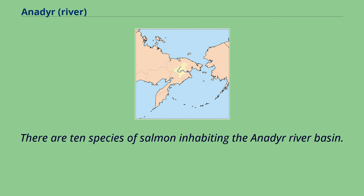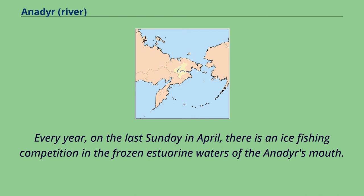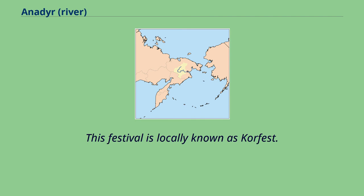There are 10 species of salmon inhabiting the Anadyr River Basin. Every year, on the last Sunday in April, there is an ice fishing competition in the frozen estuarine waters of the Anadyr's mouth. This festival is locally known as Korfest.